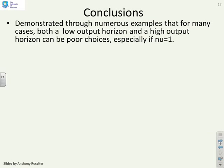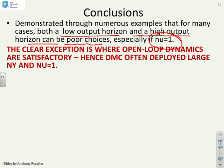Conclusions. We've demonstrated through numerous examples that for many cases, a low output horizon and a high output horizon are both poor choices when nu equals 1. The exception is where the open-loop dynamics are satisfactory in themselves, and that's why algorithms like DMC often got away with deploying a large ny and nu equals 1 because the open-loop dynamics were basically satisfactory, and therefore you didn't have a problem with your transients.